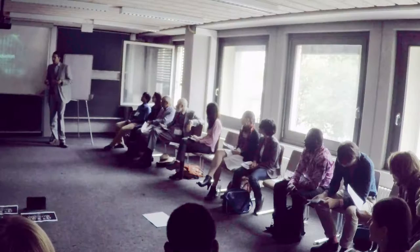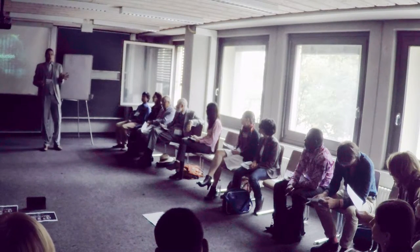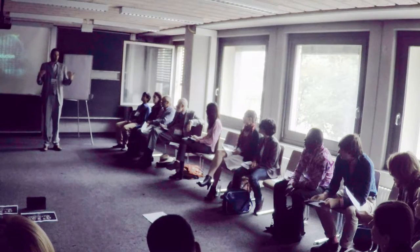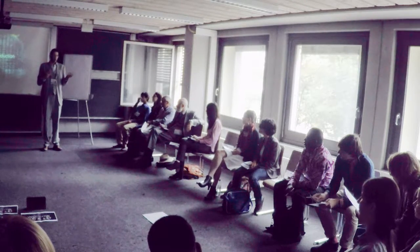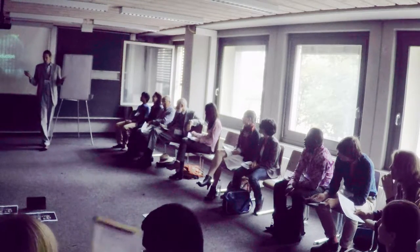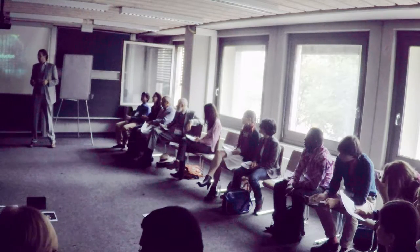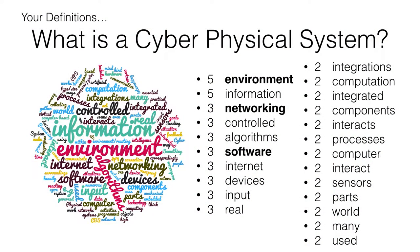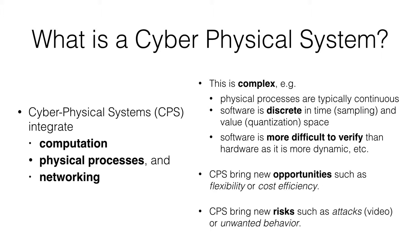I sent you before the workshop a link to a feedback sheet in Google Docs, and 17 of you filled it out — thanks a lot. The input you gave was really great because it totally matched our expectations. I asked you to answer what is also on your handout: what is a cyber-physical system? Here we see the frequency of words that occurred. Three stood out: environment, networking, and software. All the others also fit the definition. A cyber-physical system integrates computation, physical processes, and networking.